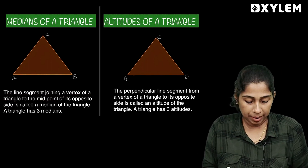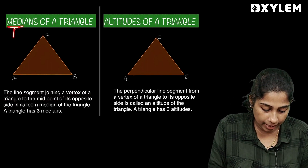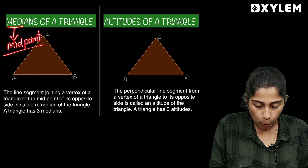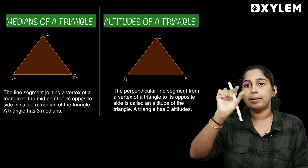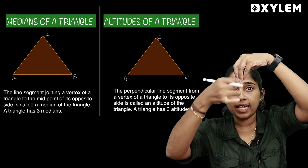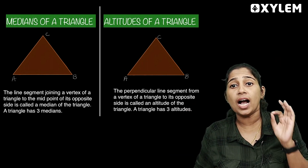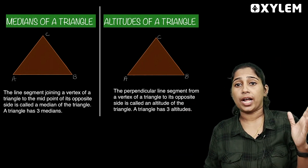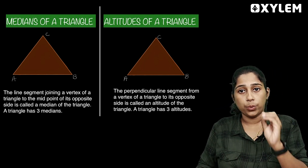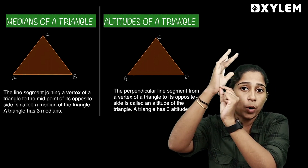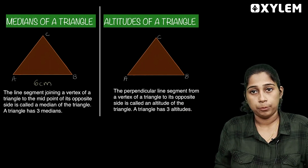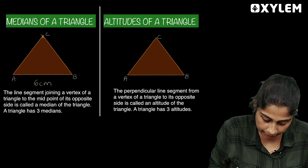This is the median. What is the median? It connects a vertex to the midpoint of the opposite side. The triangle has 3 vertices, so what is the median? It goes from a vertex to the midpoint. The opposite side is 6 cm, so the median meets at 3 cm — the midpoint.